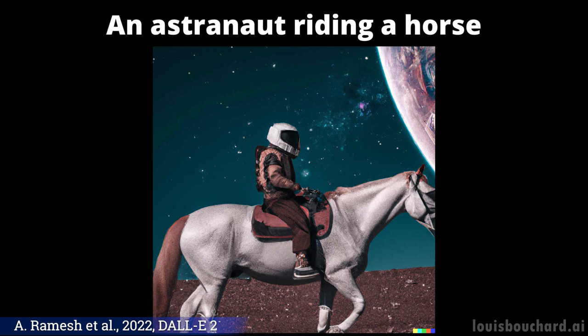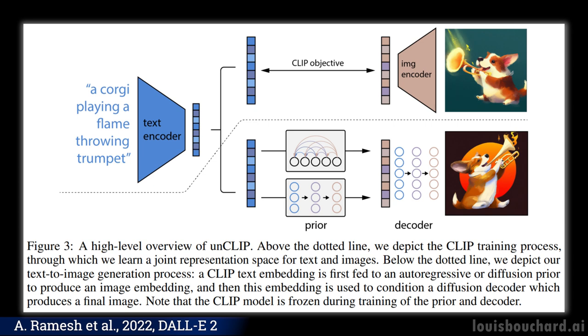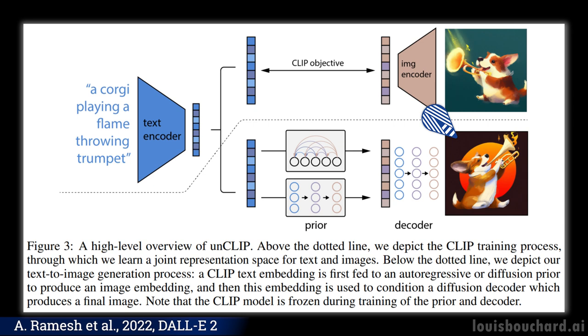But how exactly does the model understand the text we send it and can generate an image out of it? It's pretty similar to the first model I covered on the channel. It starts by using the CLIP model by OpenAI to encode both a text and an image into the same domain — a condensed representation called a latent code. Then it will take this encoding and use a generator, also called a decoder, to generate a new image that means the same thing as the text, since it's from the same latent code. So DALL-E 2 has two steps: CLIP to encode the information and the new decoder model to take this encoded information and generate an image out of it.